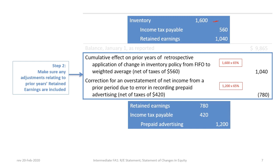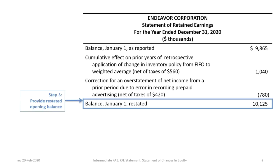For the inventory policy change, beginning inventory would be debited by $1.6 million, income tax payable credited by $560,000, and retained earnings credited for $1,040,000. For the prepaid advertising error, prepaid advertising is credited $1.2 million, retained earnings debited for the after-tax portion of $780,000, and income tax payable debited for $420,000. With the beginning balance as reported of $9,865,000 and adjusting for the two corrections, the new restated balance of retained earnings is $10,125,000.